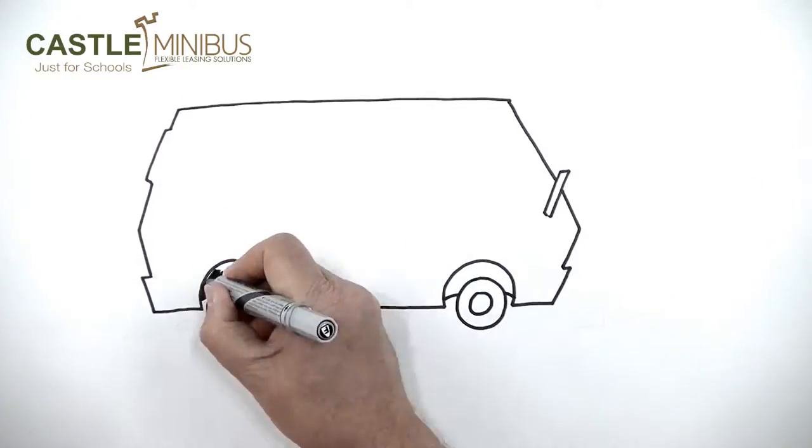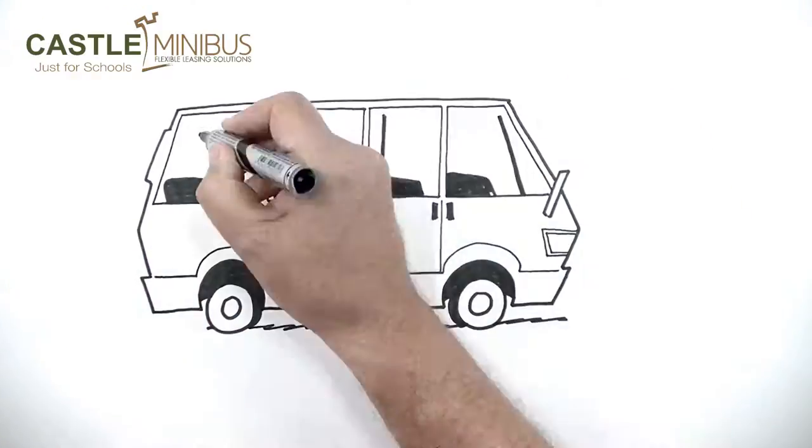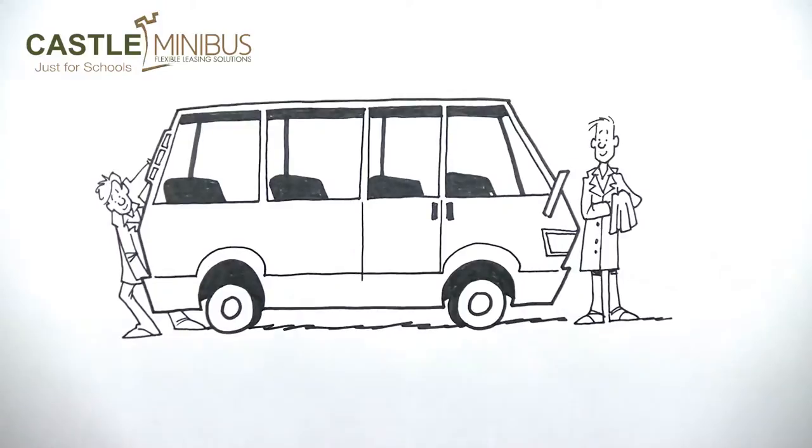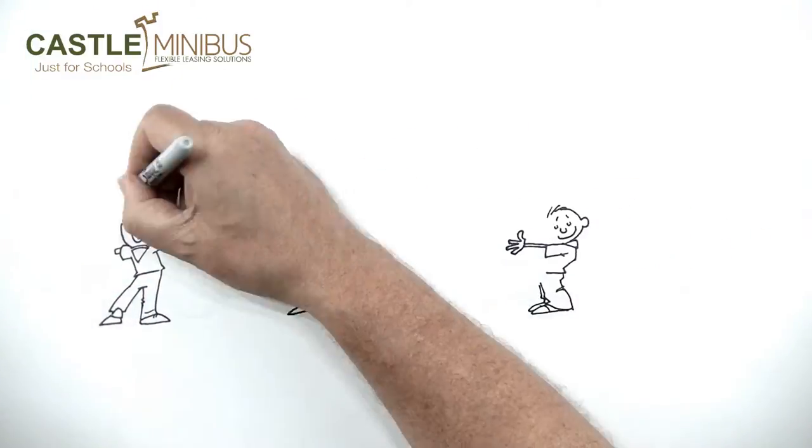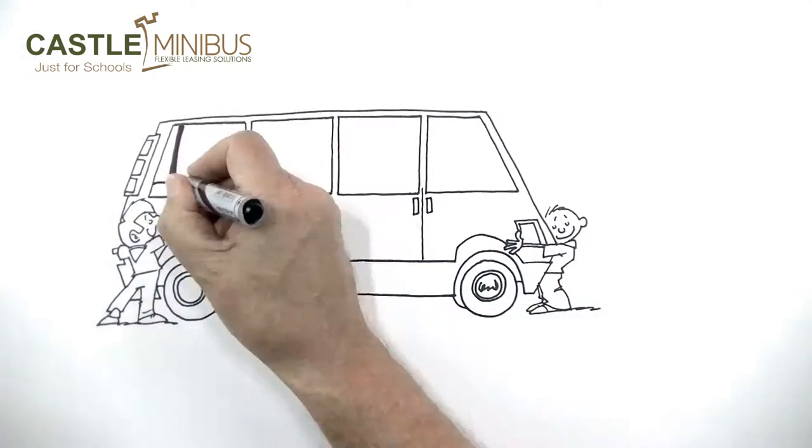Castle will buy your minibus, pick it up, remove your logos, carry out all the necessary repairs and service checks, and then rehome it like a donkey rehoming scheme so it continues its happy existence with another owner.